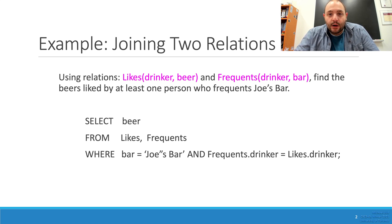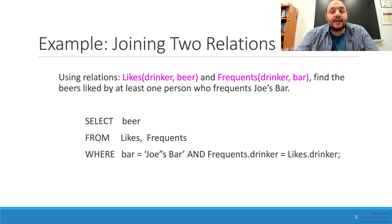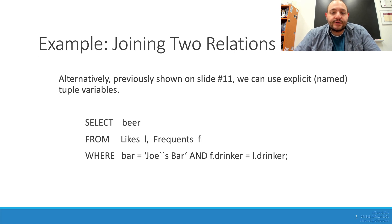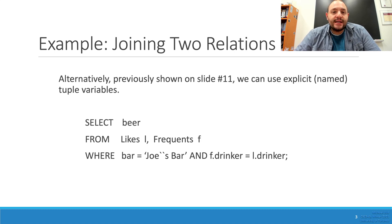There are other ways to tackle this same problem — we can use the JOIN keyword, but we'll omit that for now and talk about it later. We can also shorten how we access this information, as you can see on slide 11 of the provided PDF. For example, likes can be shortened to L and frequents to F, which reduces typing and provides a bit more flexibility.